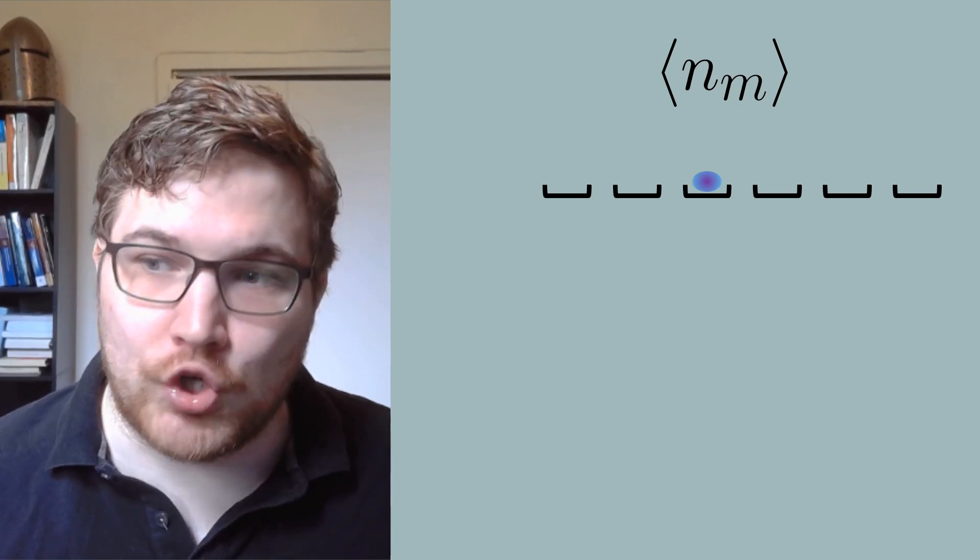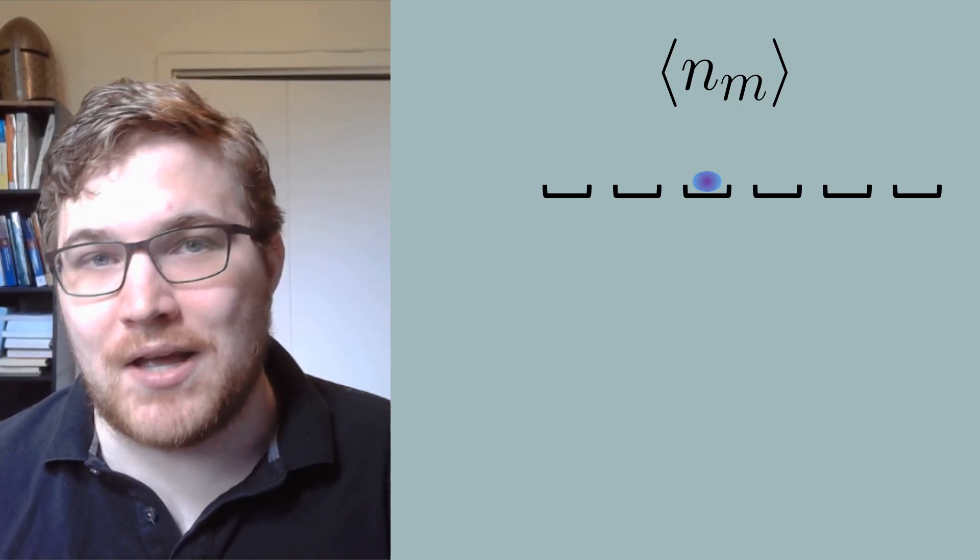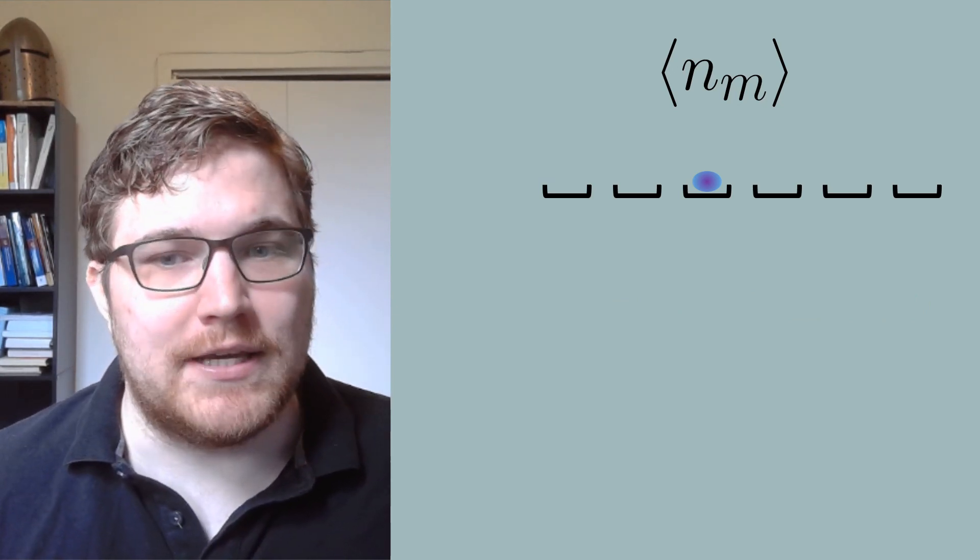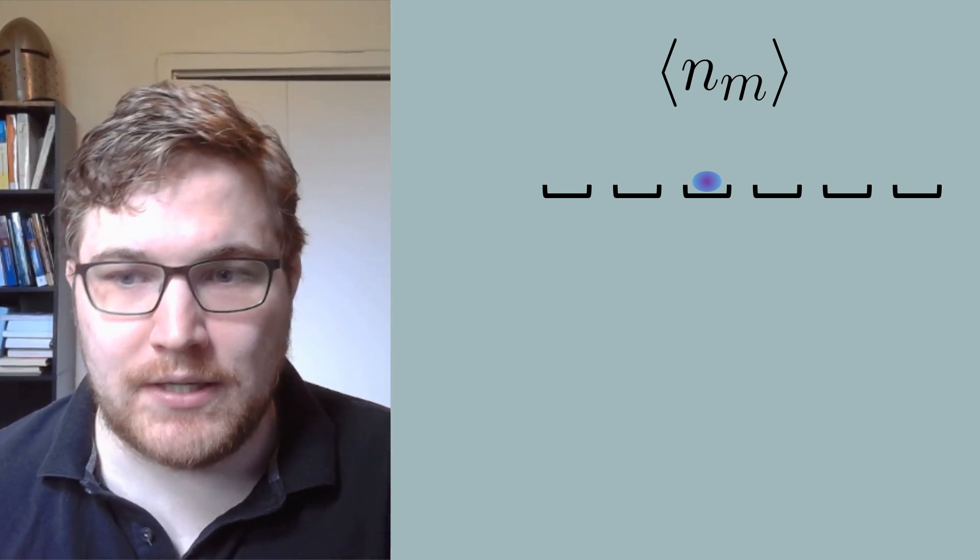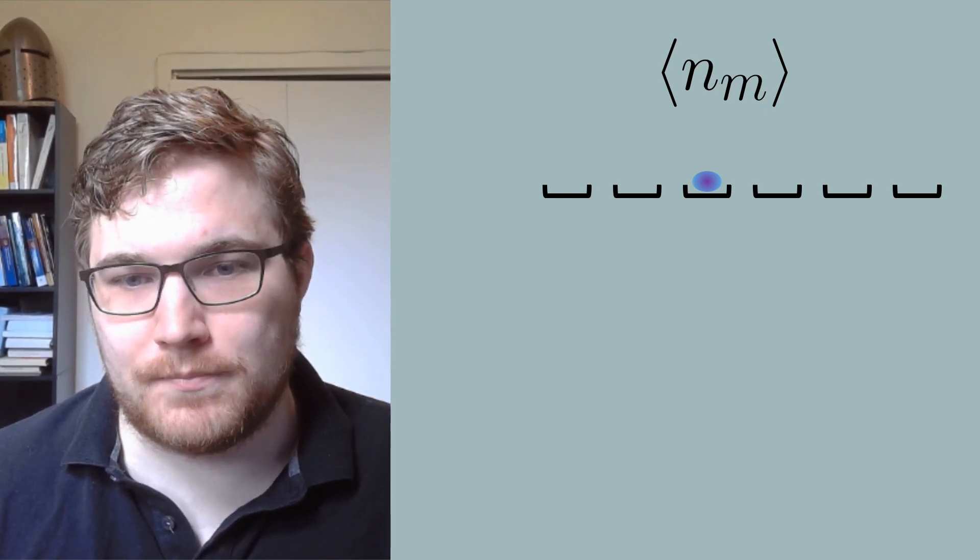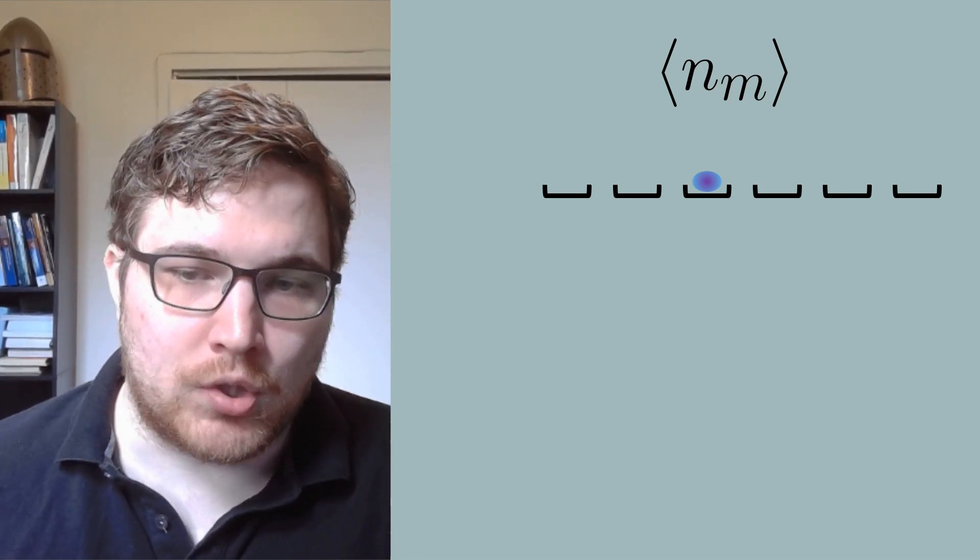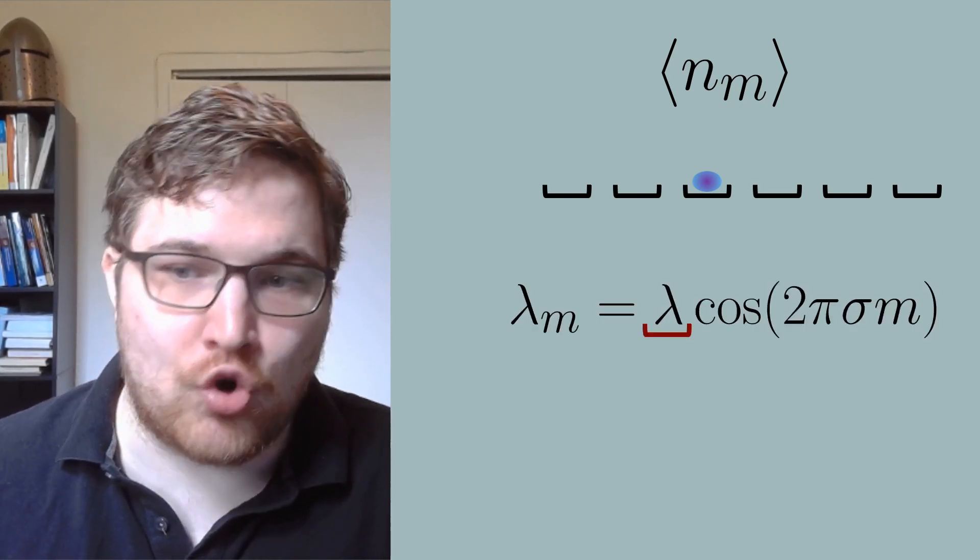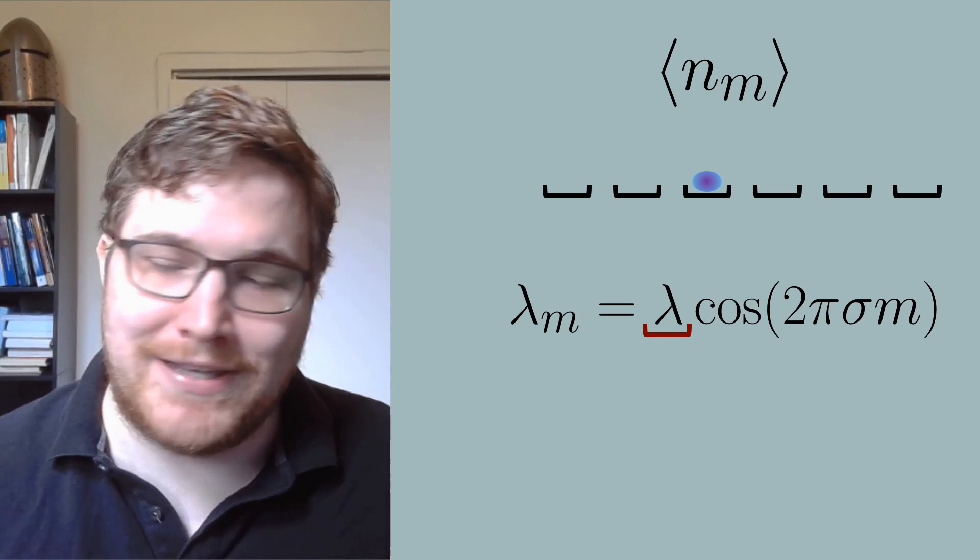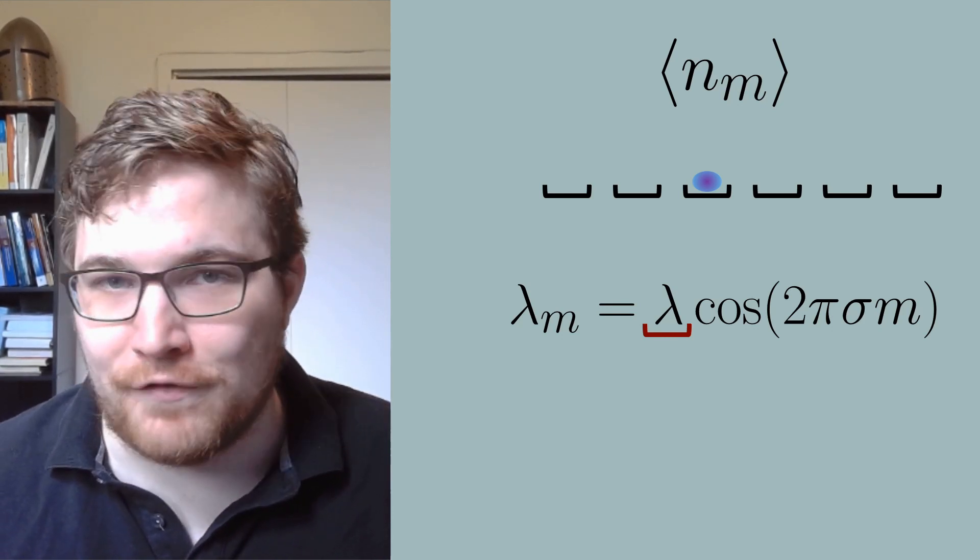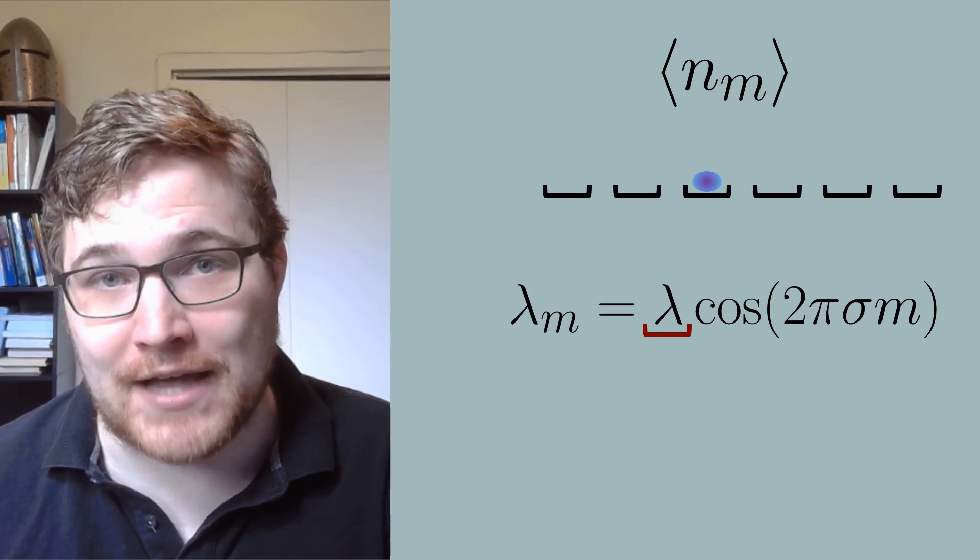We will track how the occupation number changes in time for each lattice site. If the particle is allowed to move around freely and explore the lattice, then we expect that something that looks like statistical mechanics can emerge. If it cannot move around freely, then we call it Anderson localized, and we see an example of a system that cannot thermalize.